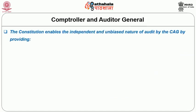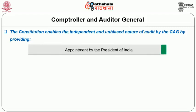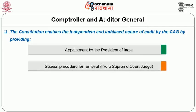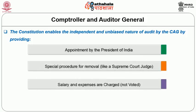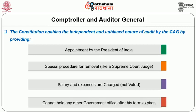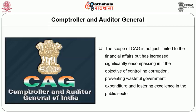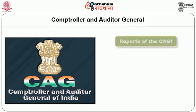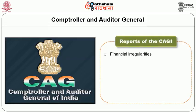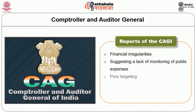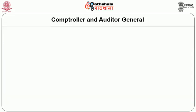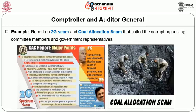The Constitution enables the independent and unbiased nature of audit by the CAG by providing for appointment by the President of India, a special procedure for removal like a Supreme Court judge, salary and expenses charged to the Consolidated Fund and not voted, and a restriction that the CAG cannot hold any other government office after his term expires. Today the scope of the CAG is not just limited to financial affairs but has increased significantly, encompassing control of corruption, preventing wasteful government expenditure and fostering excellence in the public sector. The reports of the CAG have revealed many financial irregularities, suggesting a lack of monitoring of public expenses, poor targeting, and corrupt practices in many branches of government. The most recent example is the report on the 2G scam and the coal allocation scam, which nailed corrupt organizing committee members and government representatives.